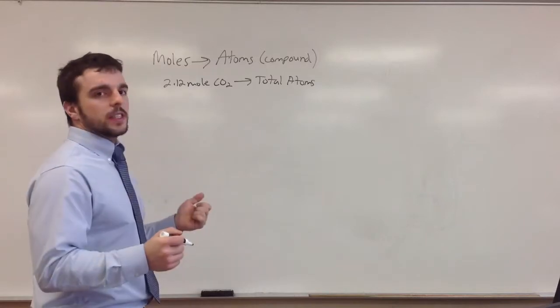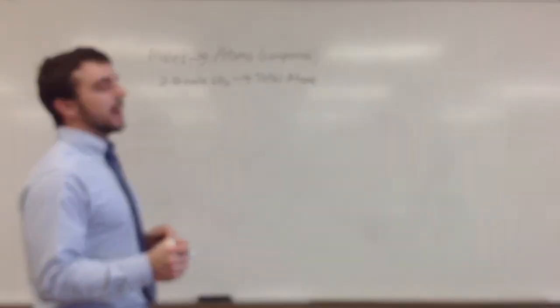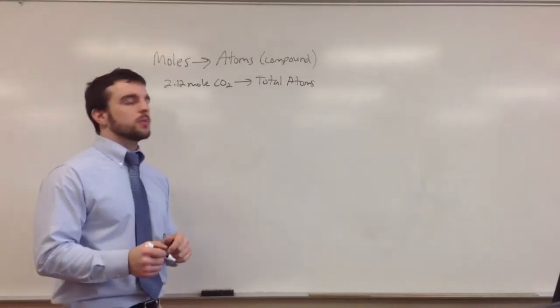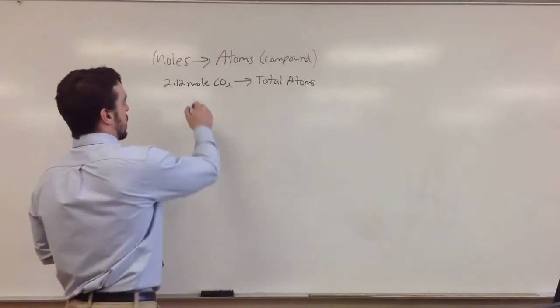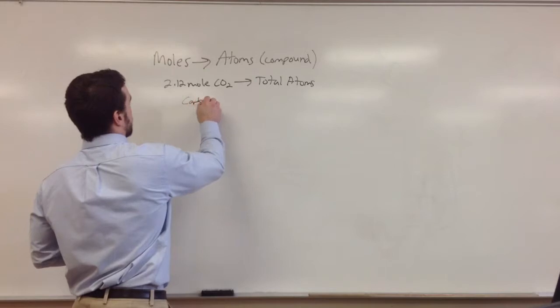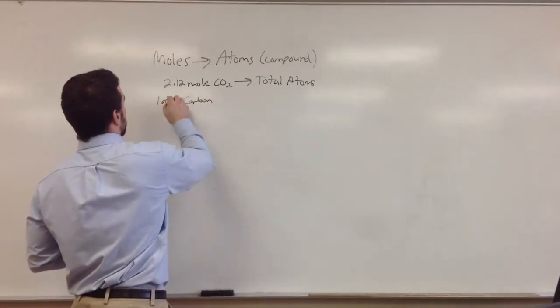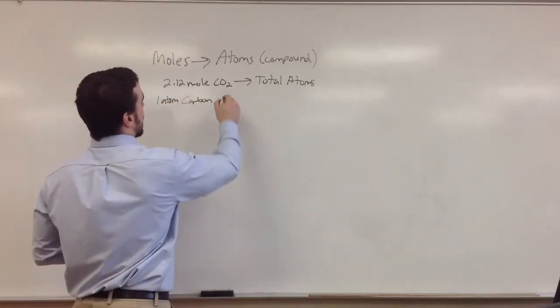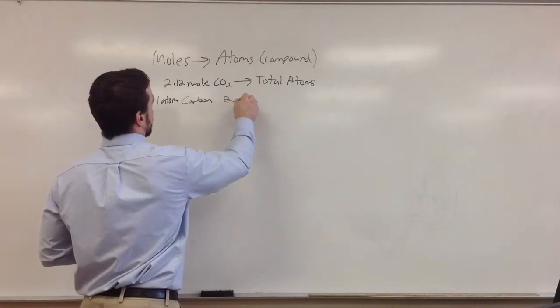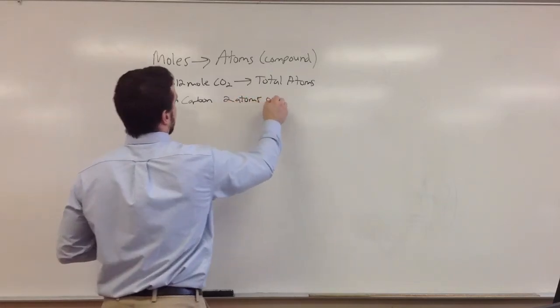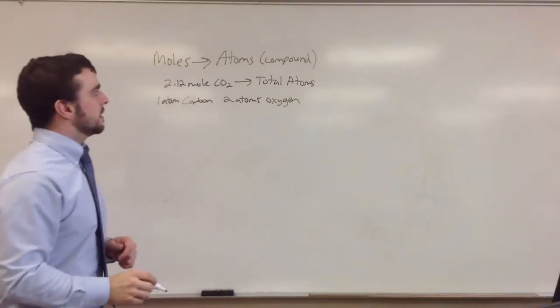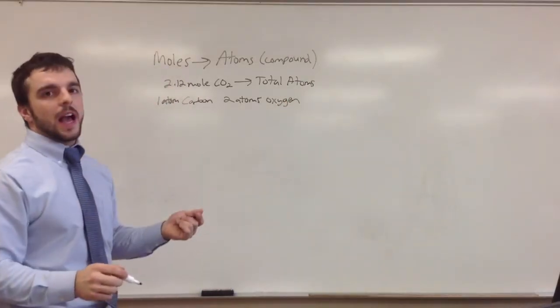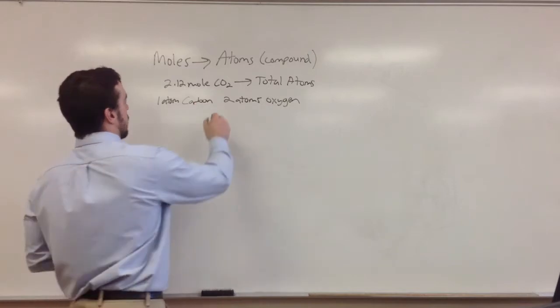So the first thing we have to understand is that carbon dioxide is a molecule, and the subscripts represent the number of atoms in that molecule. So carbon has one atom, and there are two atoms of oxygen. And that's in this molecule of carbon dioxide. So then we can say there's a total of three atoms in this one molecule.